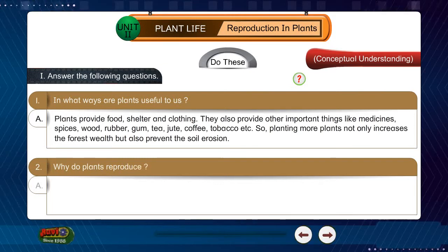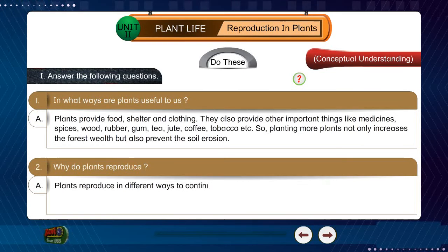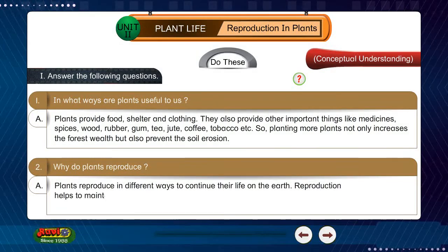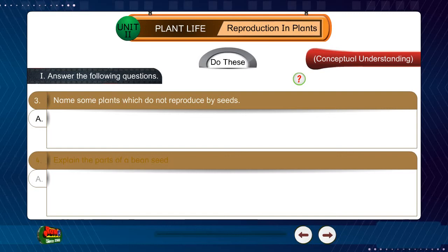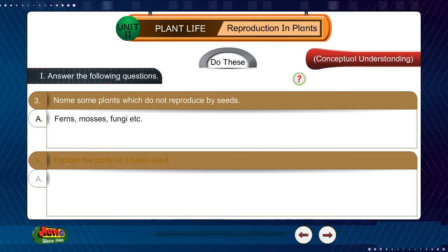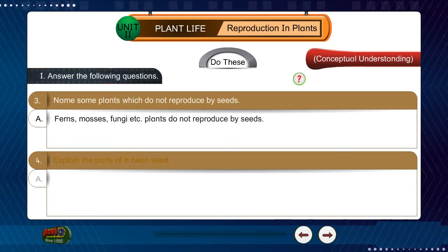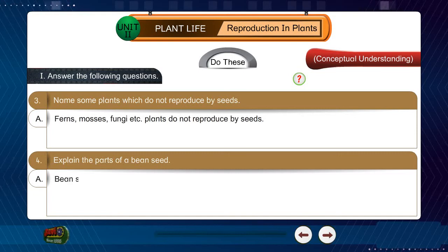Question 2: Why do plants reproduce? Answer: Plants reproduce in different ways to continue their life on the earth. Reproduction helps to maintain the existence of plants on the earth. Question 3: Name some plants which do not reproduce by seeds. Answer: Ferns, mosses, fungi, etc. do not reproduce by seeds.